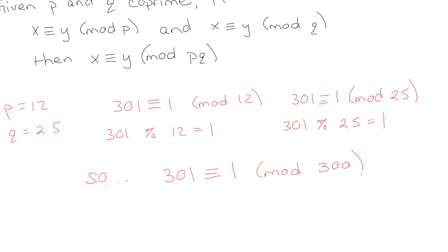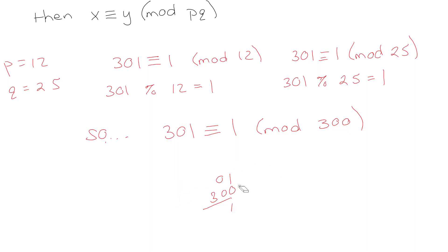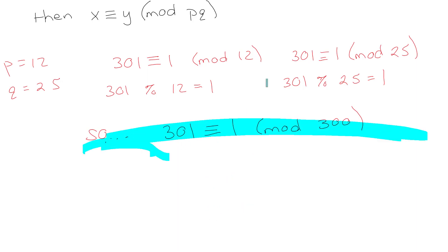So since both hold, that means 301 is congruent to 1 modulo 12 times 25, which is 300. And that should be super obvious: 301 divided by 300 is 1 with a remainder of 1.